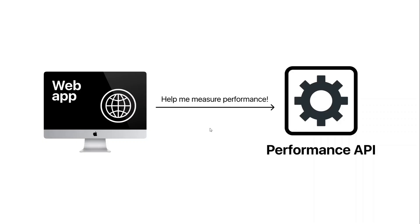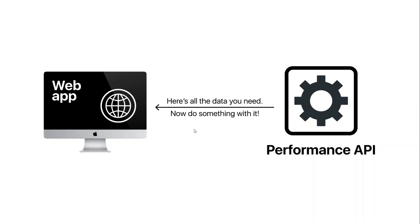The Performance API is a set of standards used to measure the performance of web applications. Based on the data this API provides us, we can make better decisions on how to improve the overall performance of the application. There are various kinds of metrics that you can focus on to improve performance.